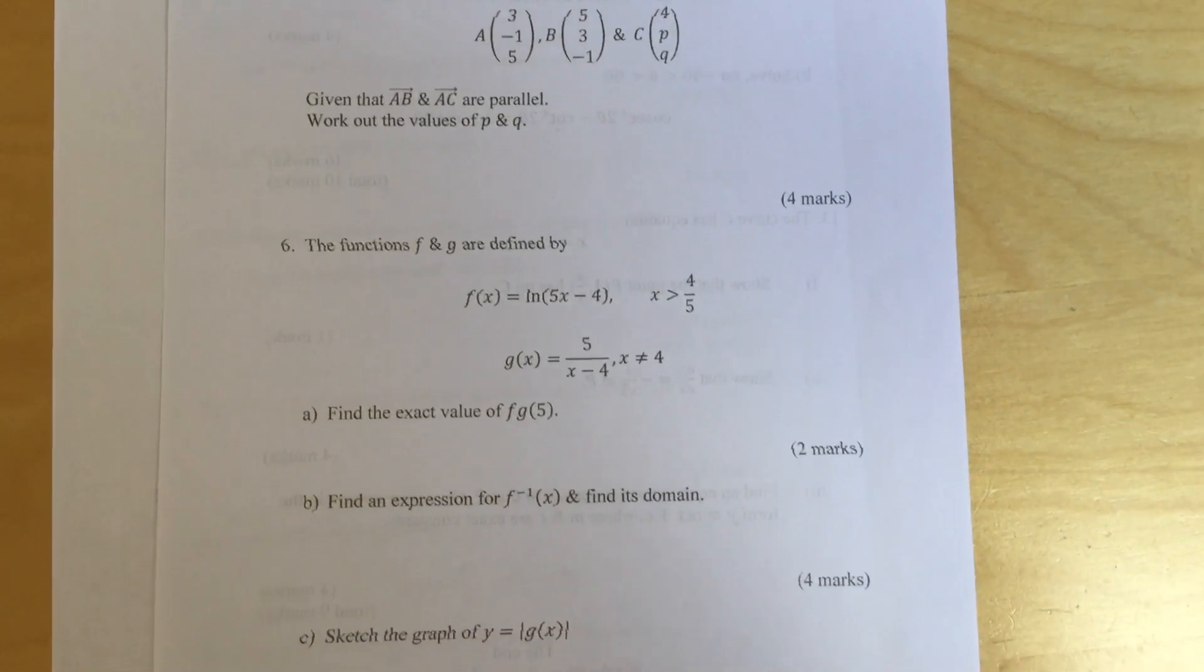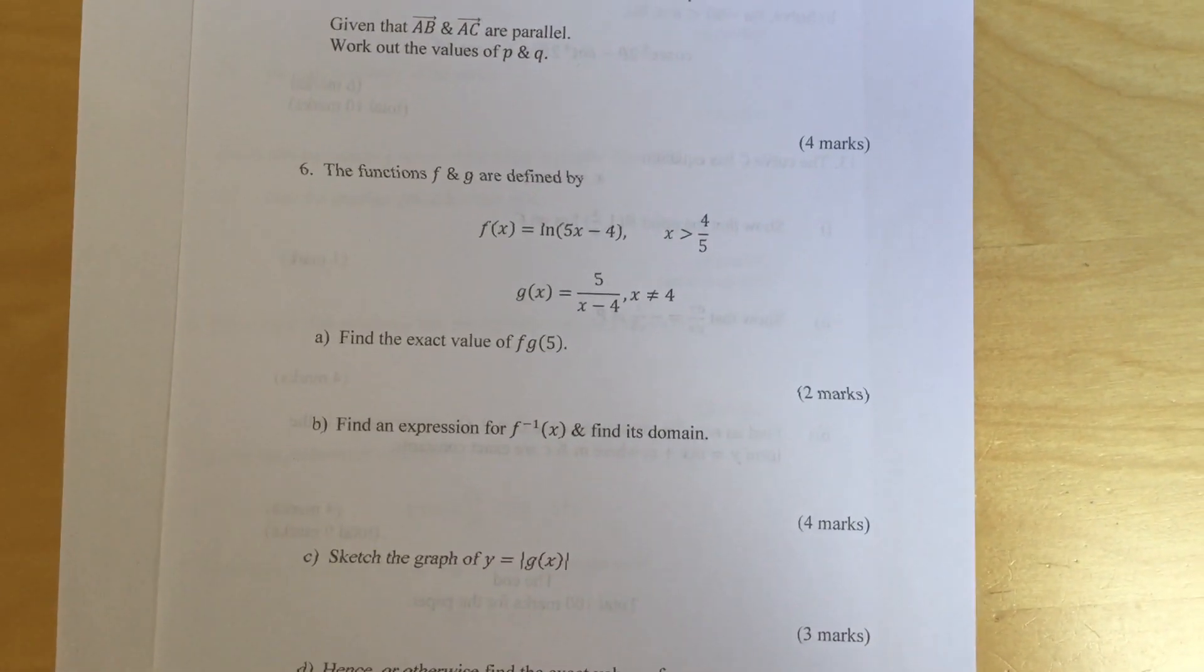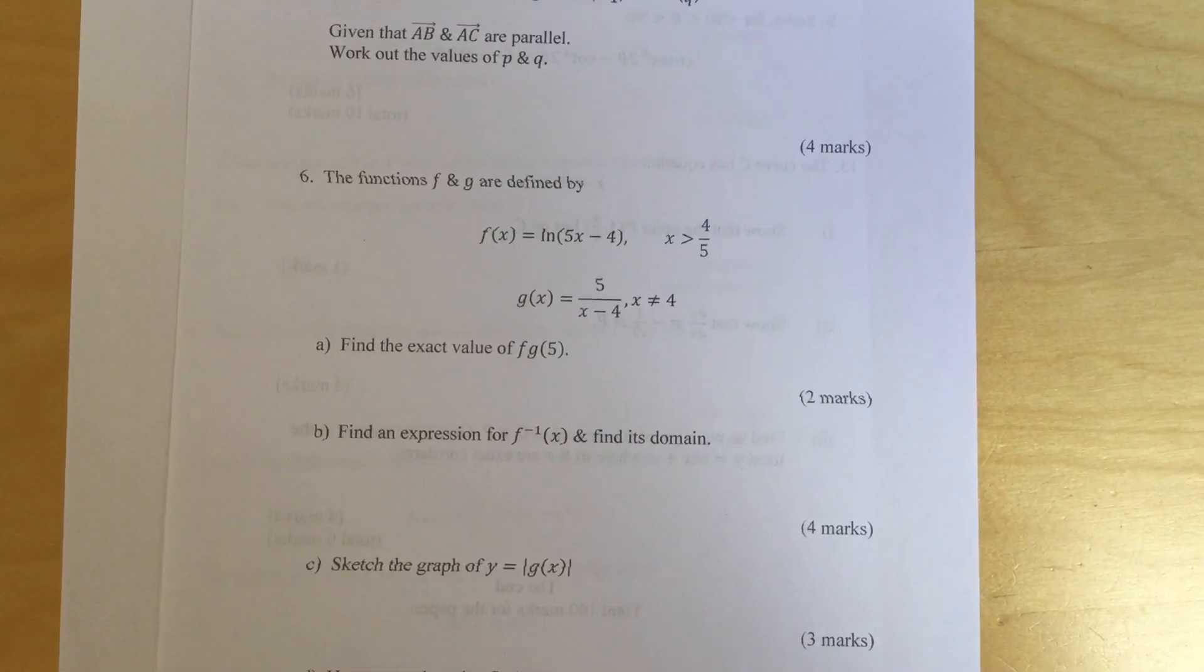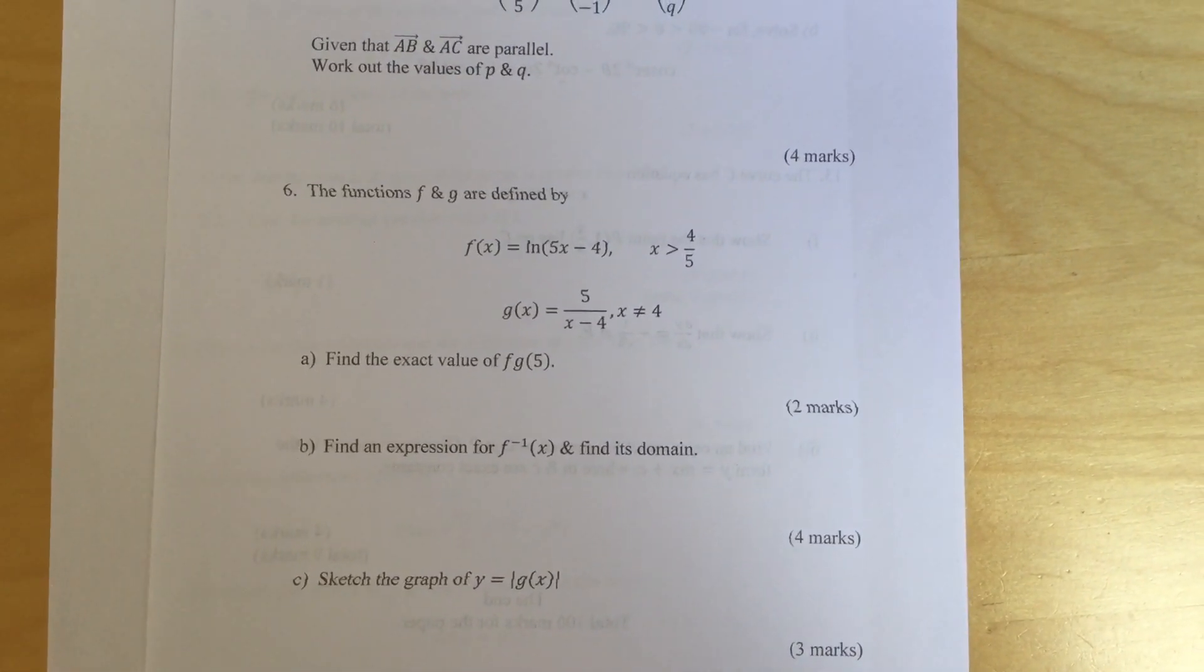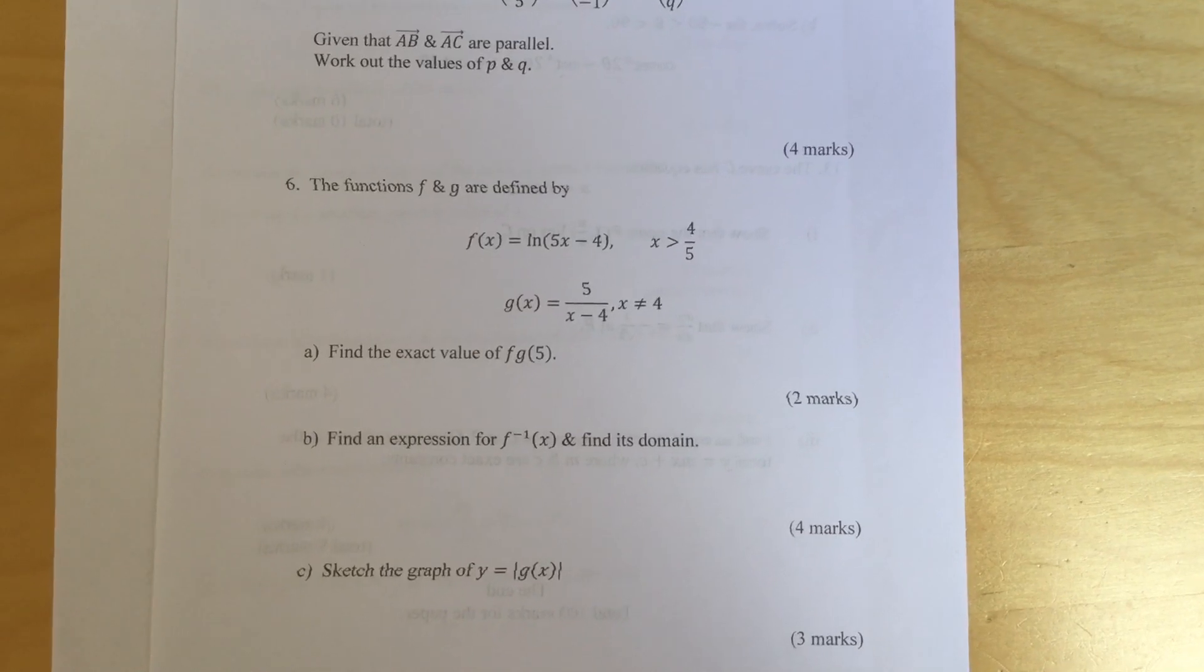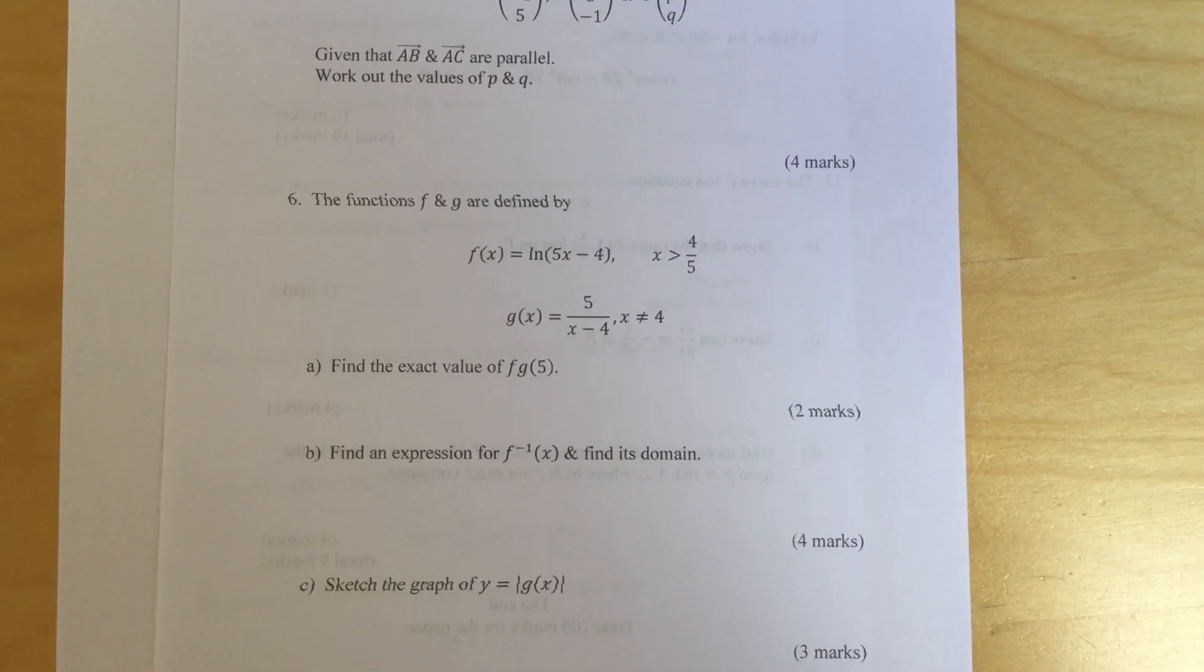Question 6: The functions f and g are defined by f of x equals ln 5x minus 4 for x greater than 4 fifths and g of x equals 5 over x minus 4 and x is not equal to 4.